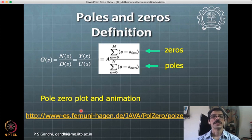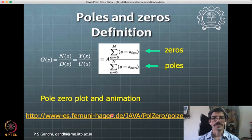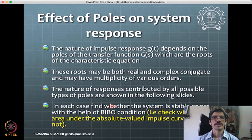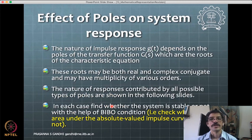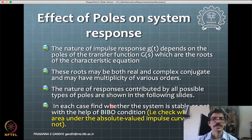The poles and zeros definitions, pole-zero plots, and some animations can be seen on the referenced websites. We will go through the effect of poles on the system response — seeing how individual poles or combinations of poles affect the response.